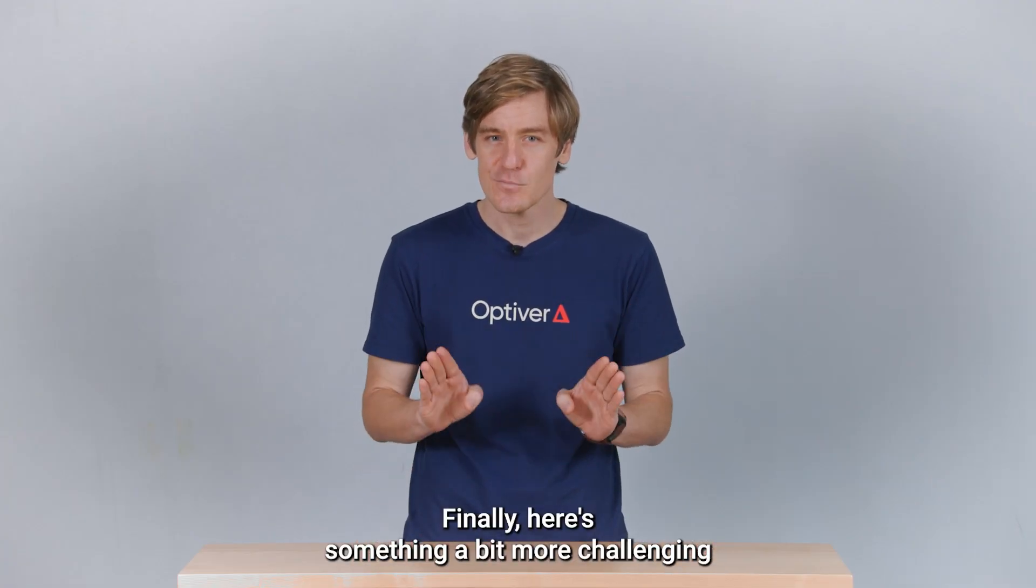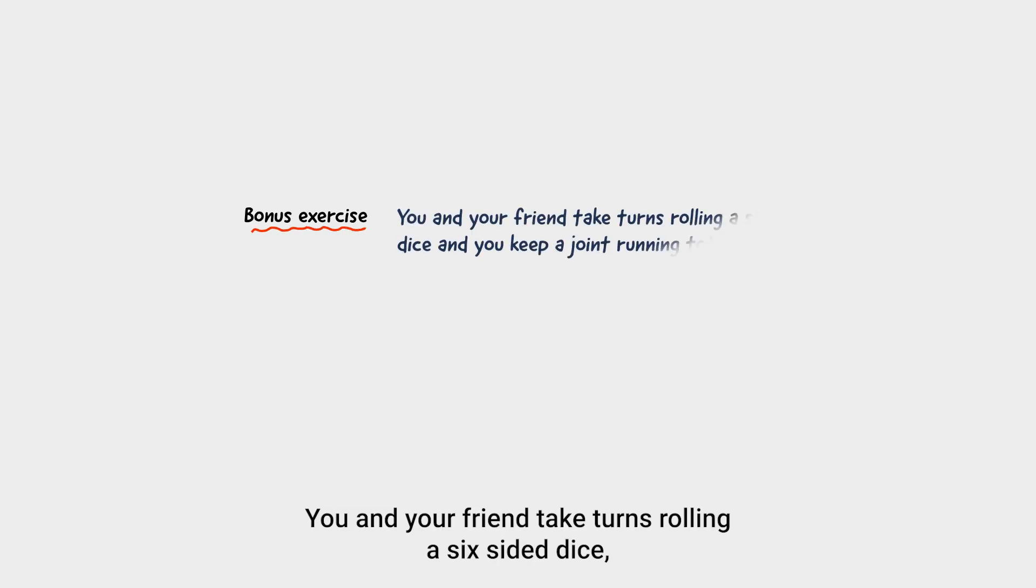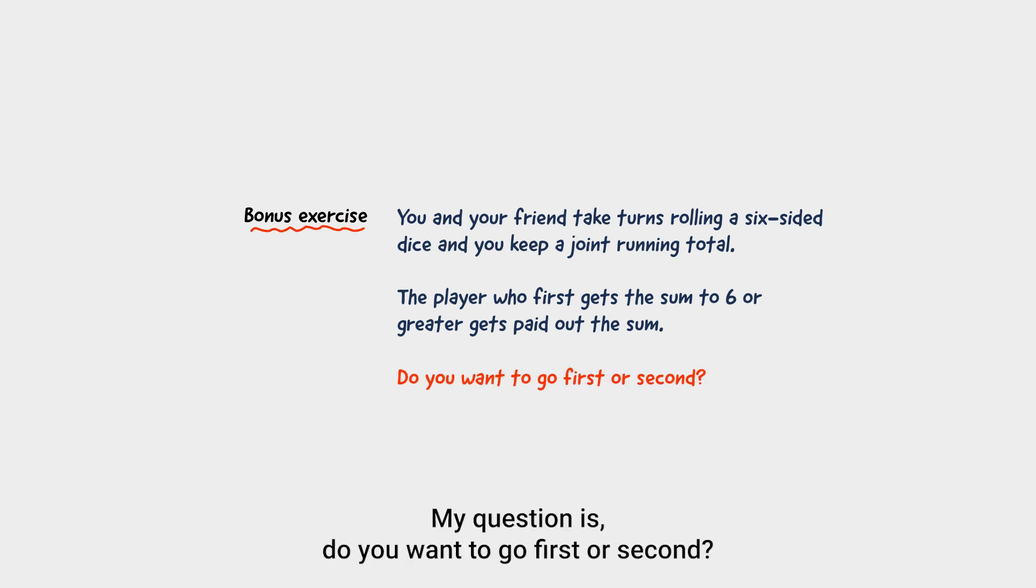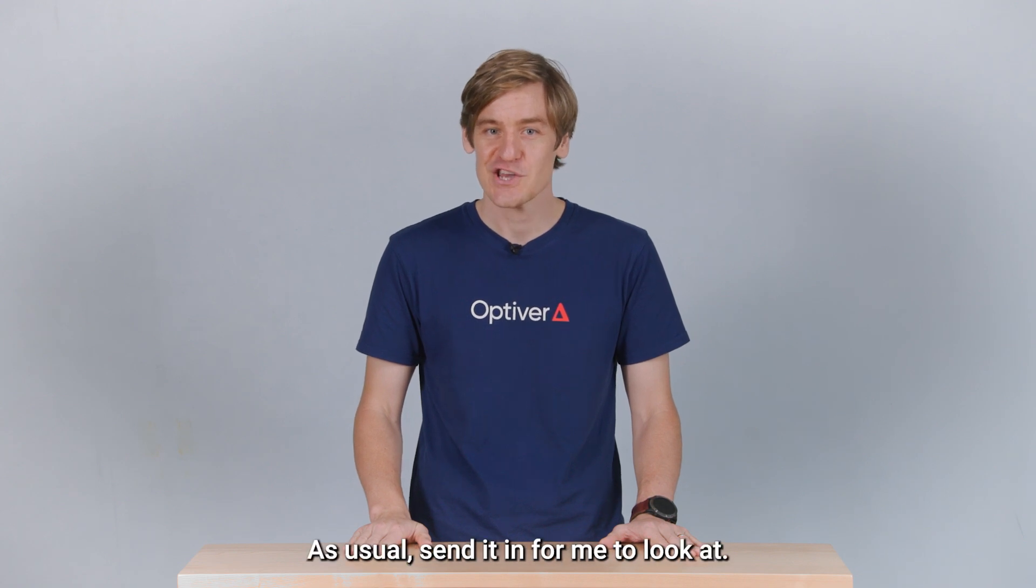Finally, here's something a bit more challenging for you to work on and send in. You and your friend take turns rolling a six-sided dice and you keep a joint running total. The player who first gets the sum to six or greater gets paid out the sum. My question is, do you want to go first or second? When you get the answer, make sure you prove it. As usual, send it in for me to look at.